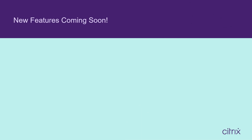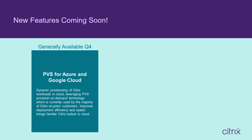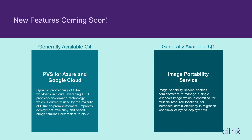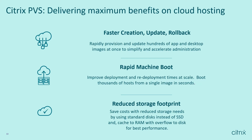Some new features coming soon to our Citrix Cloud service include PVS for Azure and Google Cloud, as well as an image portability service. PVS will be available in Q4, and the image portability service will be available in Q1 of 2022. Benefits of Citrix PVS include faster creation and update rollback — you can rapidly provision and update hundreds of apps and desktops at once, simplify and accelerate administration, improve deployment at scale, boot thousands of hosts from a single image in seconds, and reduce storage footprint by using standard disks instead of SSDs and caching to RAM with overflow to disk.